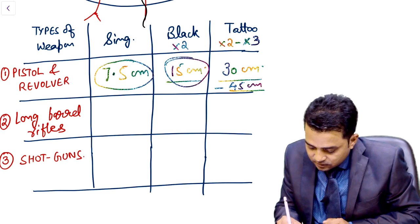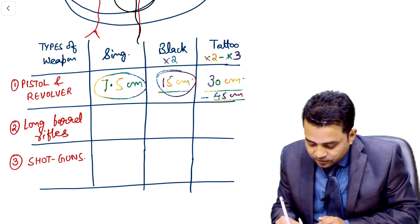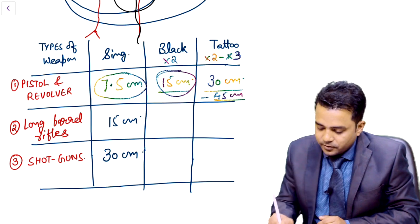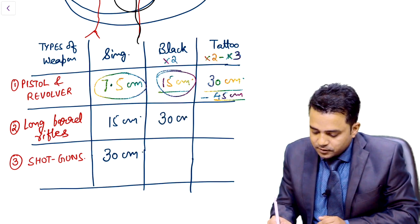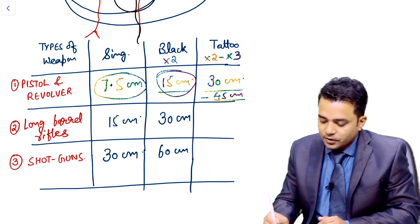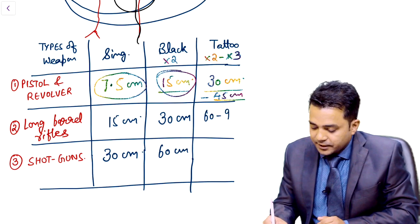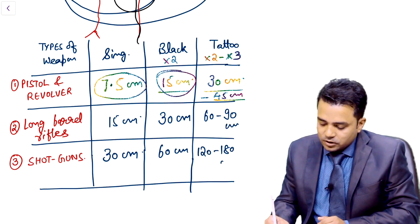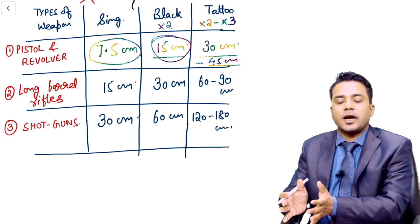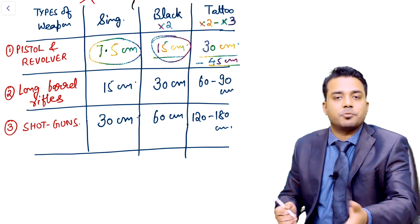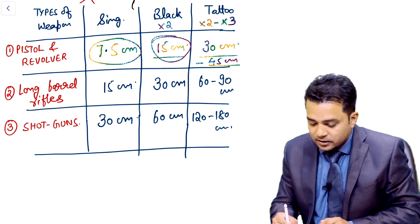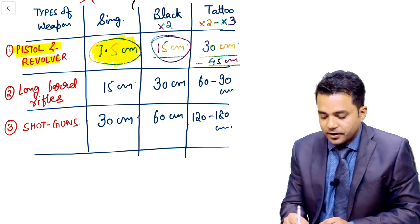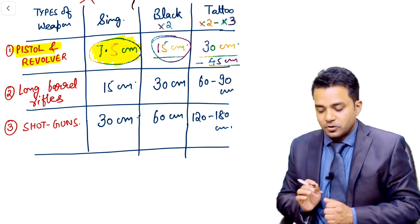For long barrel rifles, double the figures: singeing at 15 cm, blackening at 30 cm, and tattooing at 60 to 90 cm. For shotguns, it becomes 120 to 180 cm. What you need to remember is just the 7.5 cm value for pistol and revolver — make this table and it will simplify things for you.